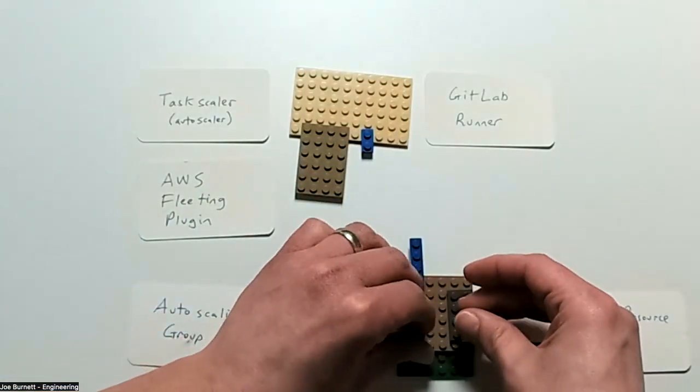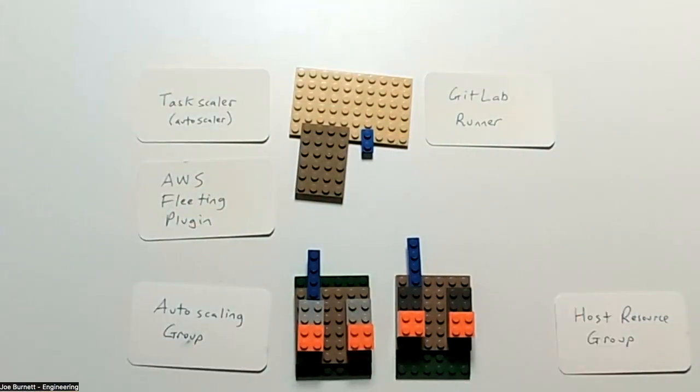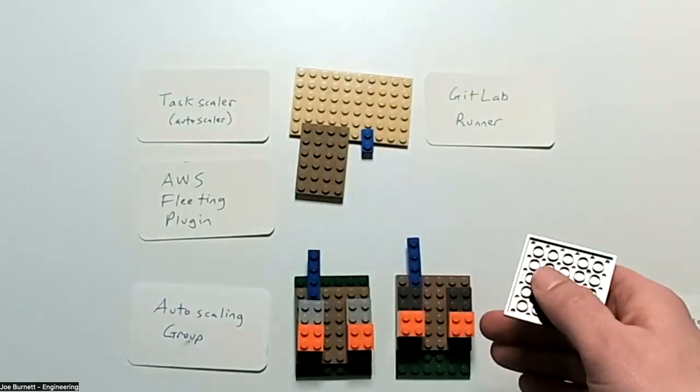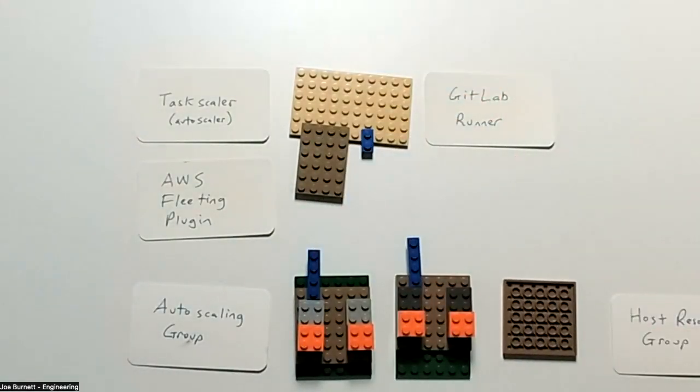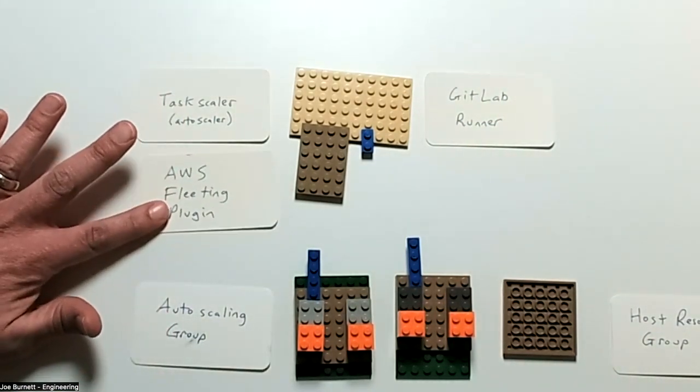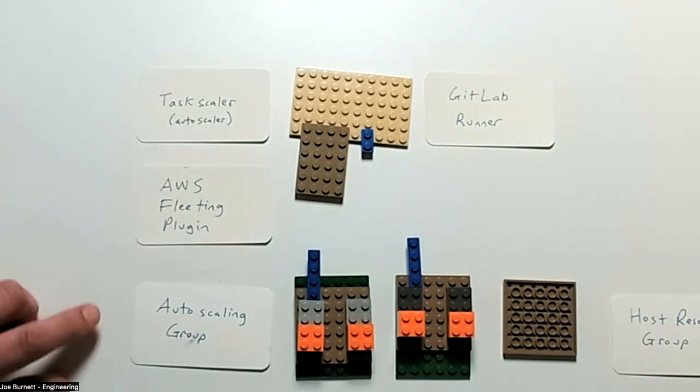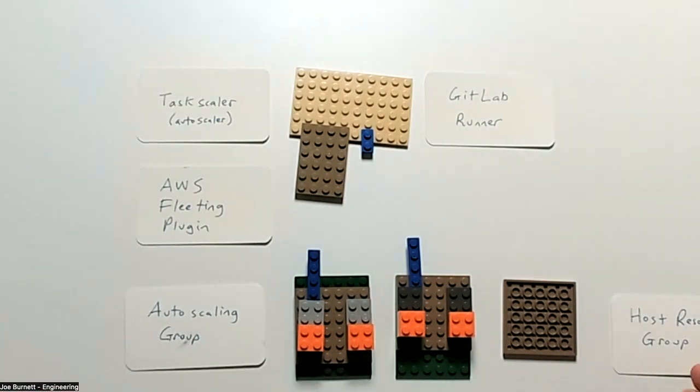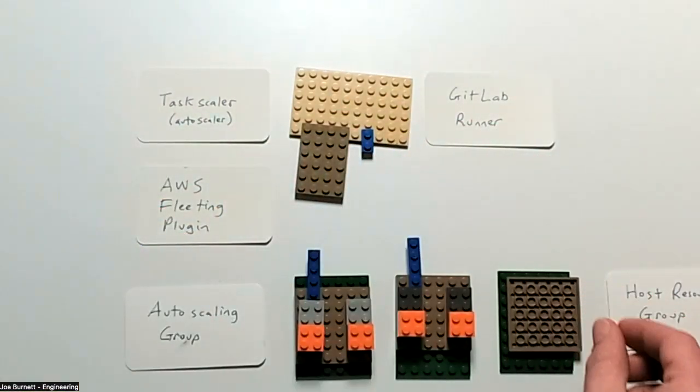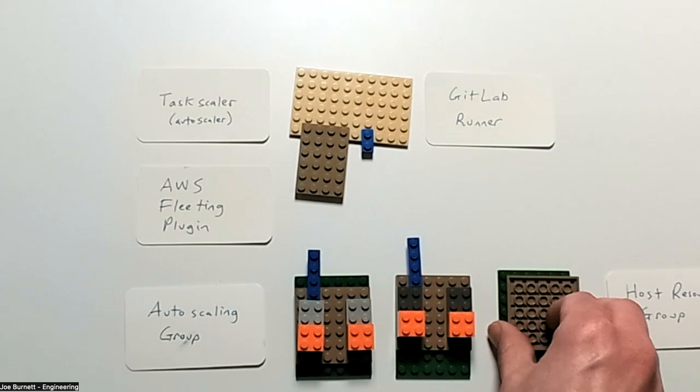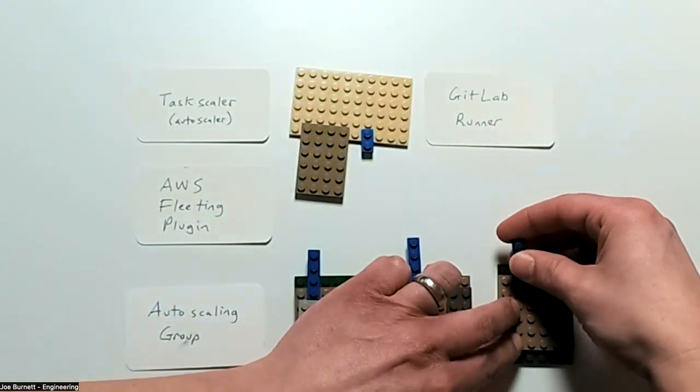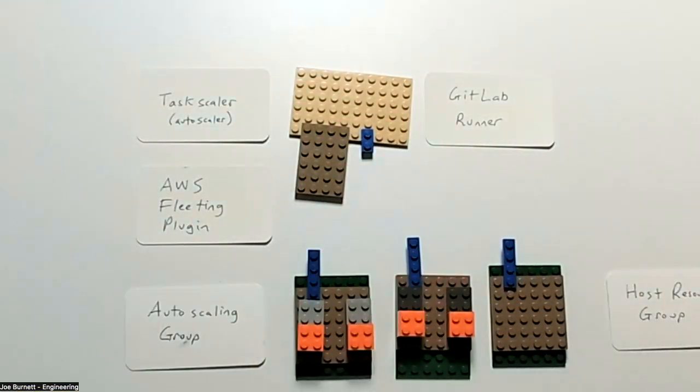Then TaskScaler said, well, actually, you know, I really want to maintain a certain number of idle machines. So it's going to create, you know, when it schedules these, it's going to create another instance to get ahead of the demand. And so autoscaling group, you know, it'll say AWS fleeting plugin, please create me more and more instance. The autoscaling group will create the instance. Host resource group will respond to that by creating a dedicated host. Instance will get scheduled on there. It will boot. Once it's done booting, it'll have a nesting server running and it's ready to go.